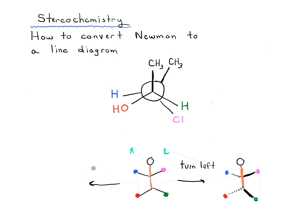Now imagine we also want to see the right shoulder, so we ask them to turn to the right — the opposite direction. In that case, we redraw everything: their right hand and right foot will be pointing towards us as wedges, and their left hand and left foot will be pointing away as dashes. The axis still doesn't change.